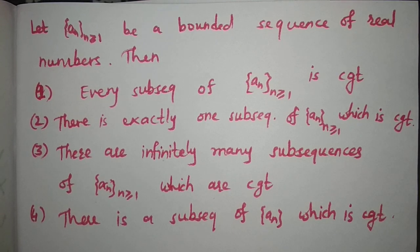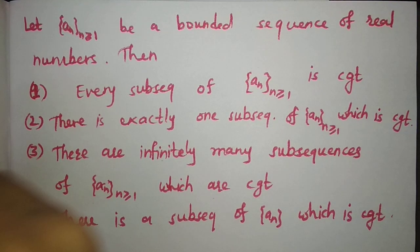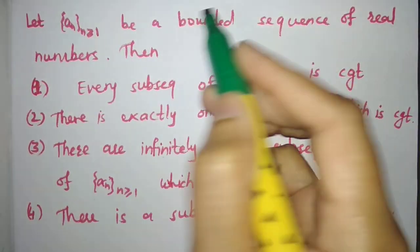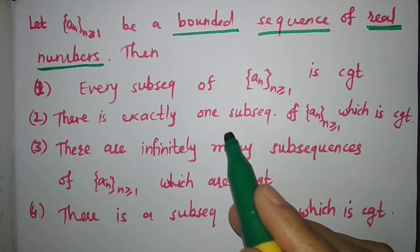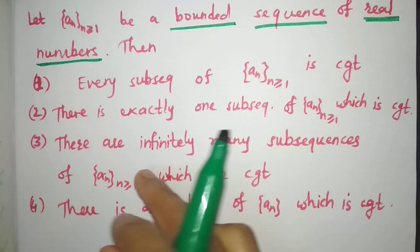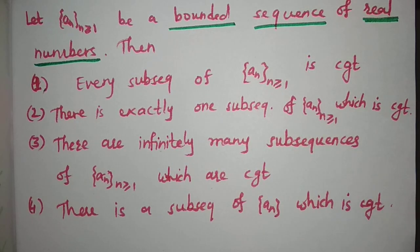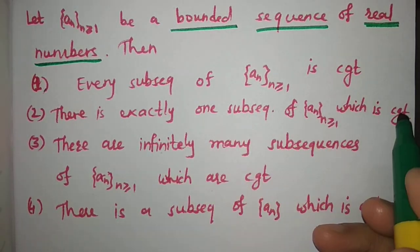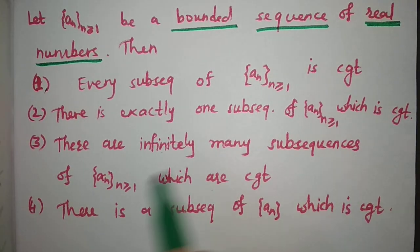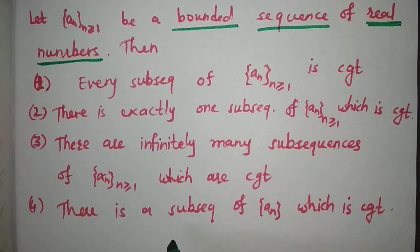In this video I am going to solve a question from GATE 2019 December Part C. Since the question is from Part C, more than one option can be correct. The question is: let a_n be a bounded sequence of real numbers. We have four options and we have to choose which are true for the given bounded sequence of real numbers. The first option is every subsequence of a_n is convergent. The second is there is exactly one subsequence of a_n which is convergent. Third is there are infinitely many subsequences of a_n which are convergent. And fourth is there is a subsequence of a_n which is convergent.